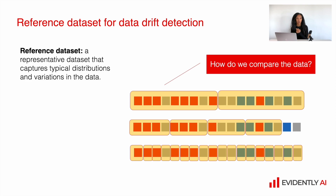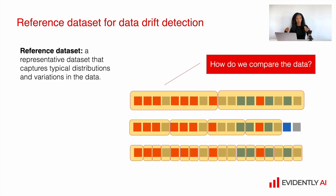Reference data for drift detection is quite important, and we need to make sure we use representative data that captures typical distributions and variations. We need to decide how we are going to compare the data — whether monthly, comparing the previous month with the next, weekly, or daily. In that case, the reference dataset is that previous period of data. It's always good to first check historical data and apply different strategies before deciding what type of reference dataset to use in production monitoring.